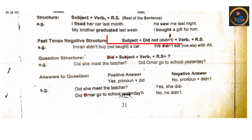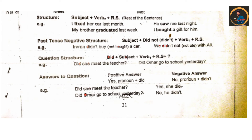Then we have the negative structure. In negative structure we add 'did not.' You keep in mind that in simple past tense negative structure, you will use 'did not' plus verb first form. In positive we use the second form of the verb, but in negative we have the helping verb 'did.' So when we use 'did not,' the verb goes back to first form. For example: 'Imran didn't buy a car,' 'We didn't eat with Ali.'